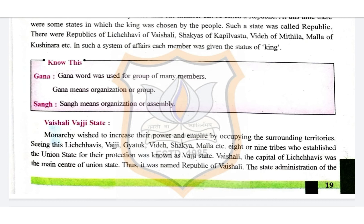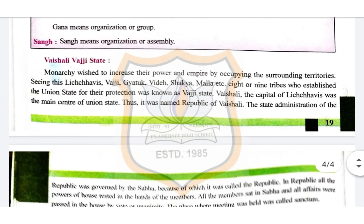In such a system, each member was given the status of king. The word 'gana' was used for a group of many members — gana means organization or group. 'Sangha' means organization or assembly.